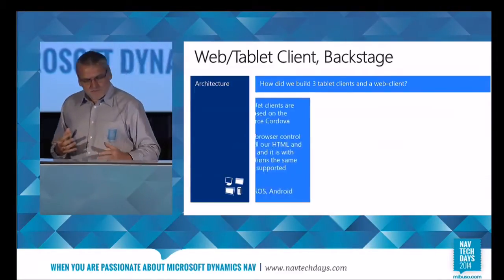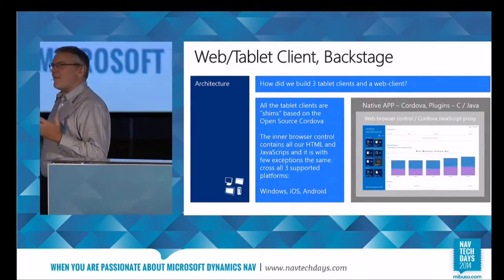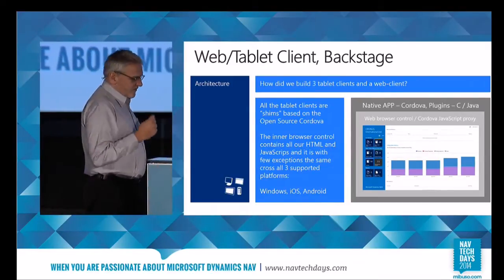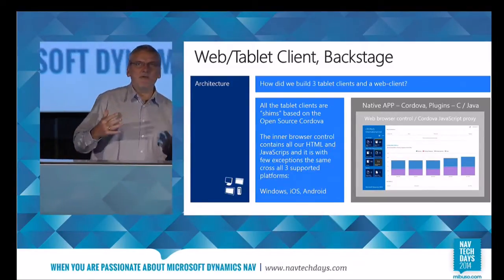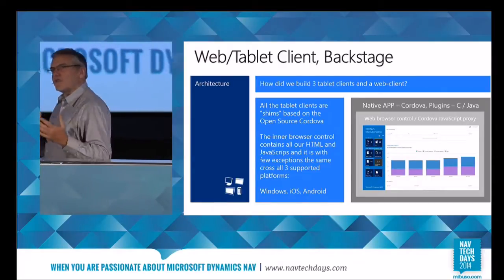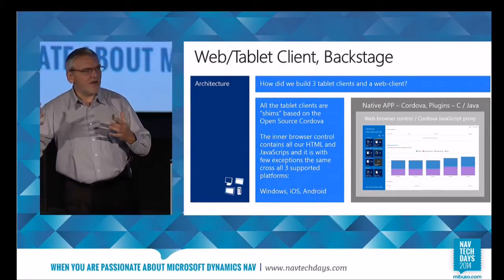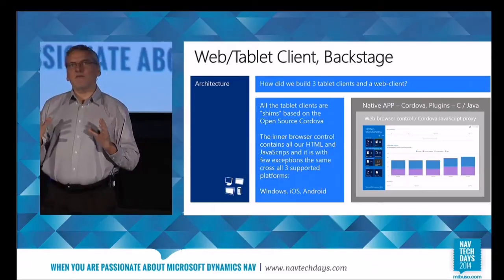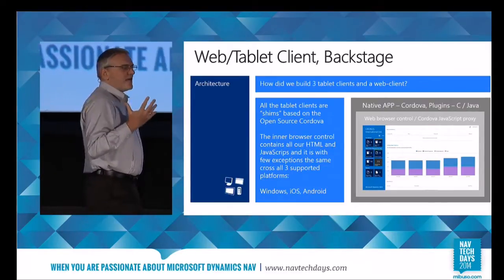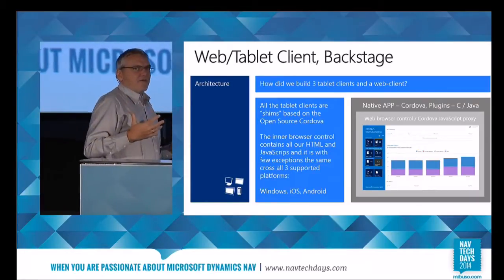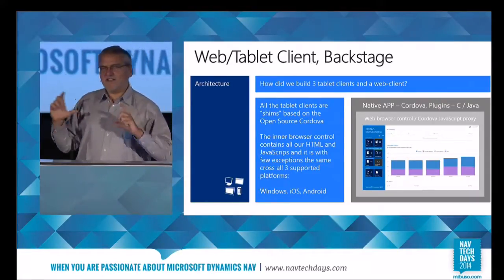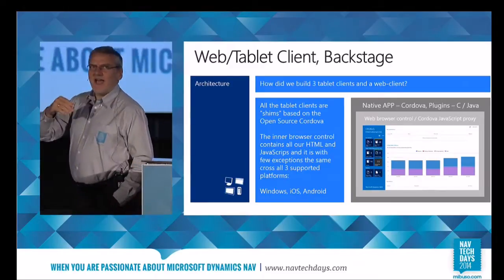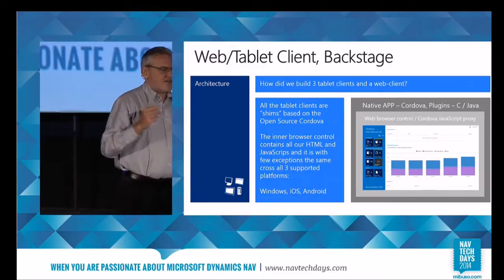The three tablet clients are basically only one. We use an open source framework called Cordova. These guys have built a native app which runs on iOS, Windows, and Android. Inside that, they host a web control, and inside the web control there are some APIs — eventually it ends up being HTML5 and JavaScript. So what we built is only — though it's quite difficult — an HTML5 JavaScript client that can run inside these shims, which are three different shims built by the Cordova framework. We end up having basically a single client running across three platforms, which is pretty cool.